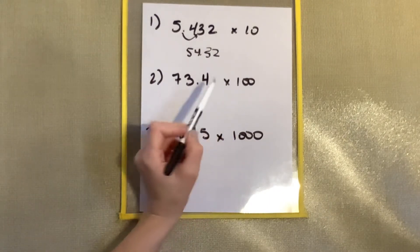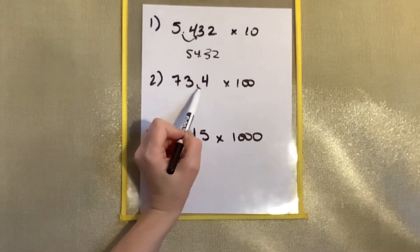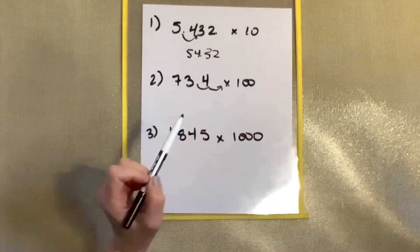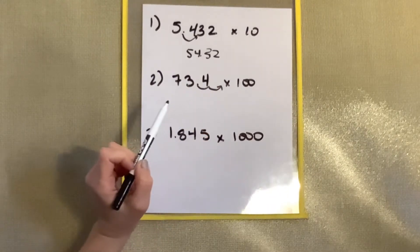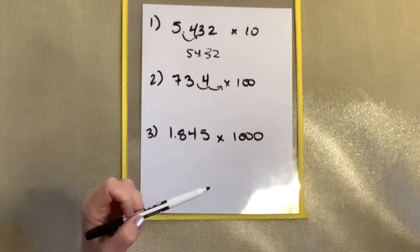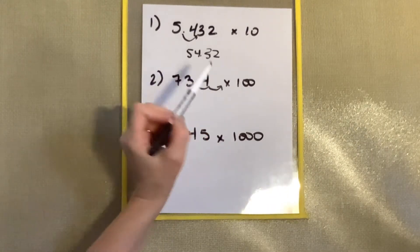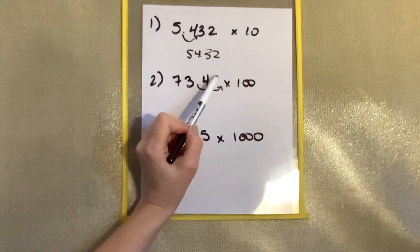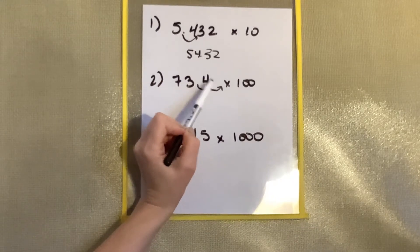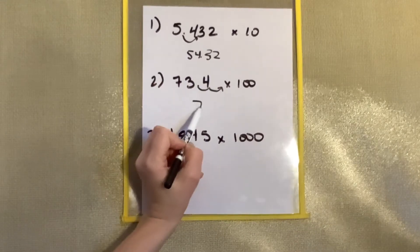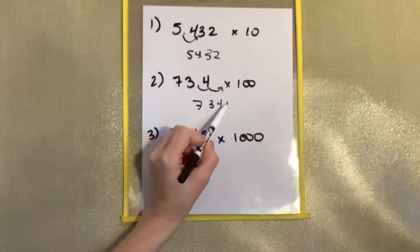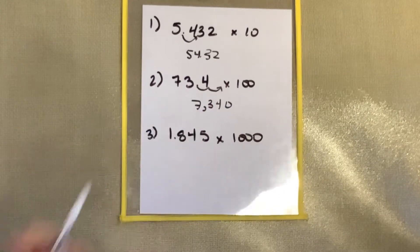Here we see two zeros, so we're going to go two places to the right. This is just moderately trickier, because there's nothing here, but we can imagine a zero here, so we end up with 7,340.